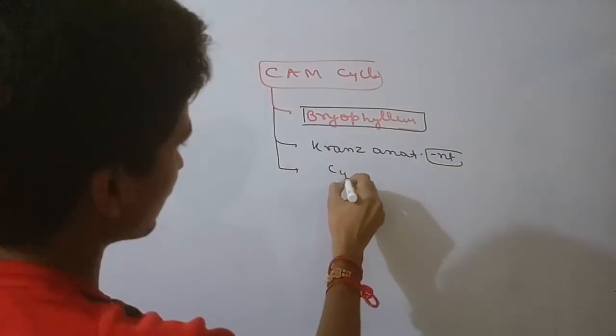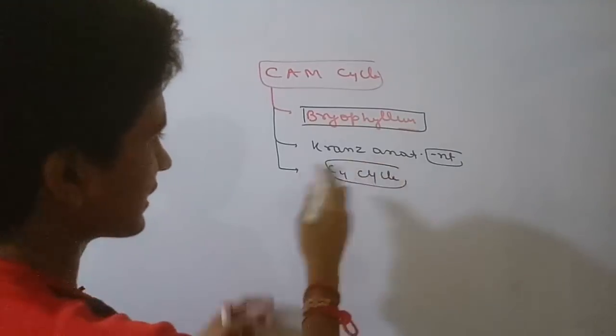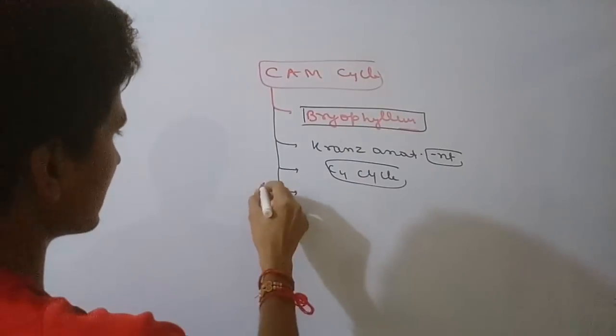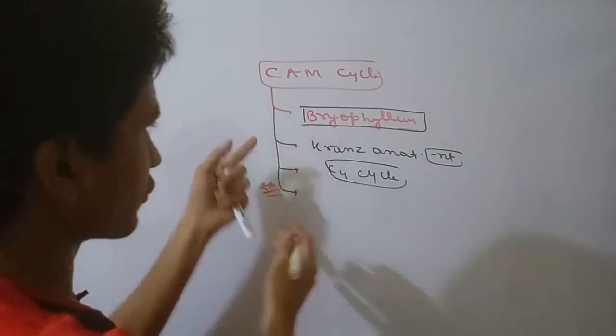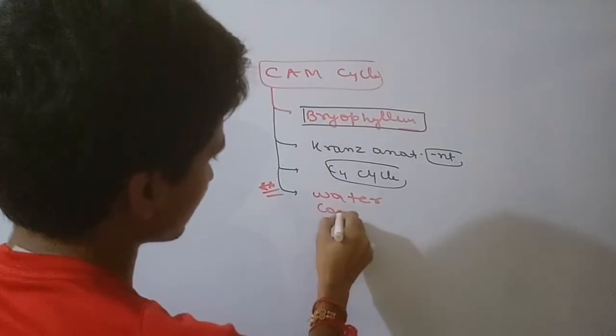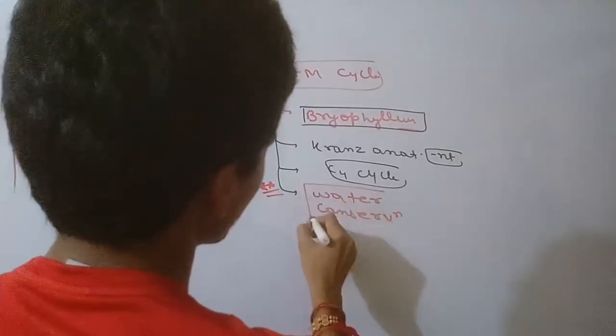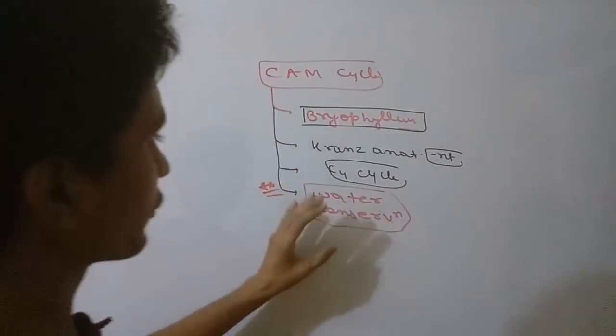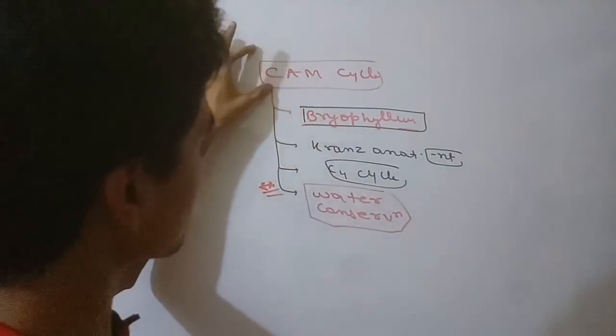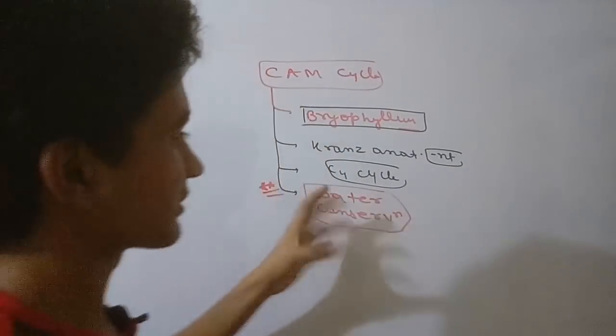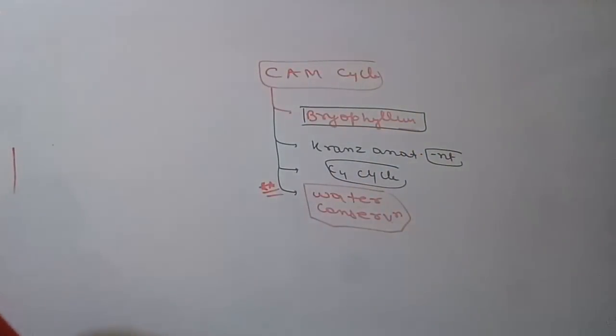I will discuss this with you. The simple question is: CAM plants use this cycle for water conservation. This is a simple question. The CAM cycle is important for your water conservation. This tells that the plants have basically a time cycle for water conservation.